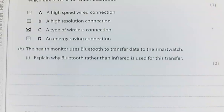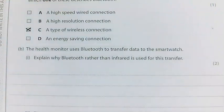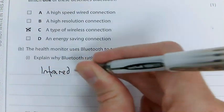3B.1: The health monitor uses Bluetooth to transfer data to the smartwatch. Explain why Bluetooth rather than infrared is used for this transfer. You need to be looking at the context here - it's a health monitor. A lot of students who answered this question did not look at the context. To get a grade 9, you need to explain why Bluetooth is used and relate it back to the context.